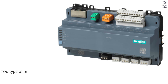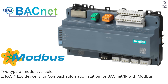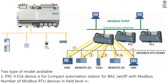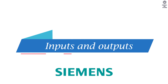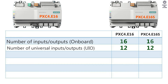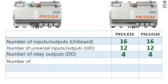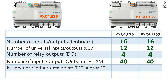Types: 2 types of model available. 1. PXC4E16: Compact Automation Station for BACnet IP with Modbus; number of Modbus RTU devices in field-level network per device is up to 31. 2. PXC4E16S: Compact Automation Station for BACnet IP only. Number of Universal Inputs and Outputs for both models is 12; Relay Outputs is 4. Total I/O onboard plus TXM for both PXC4E16 and PXC4E16S is 40. Number of Modbus Data Points TCP/RTU: PXC4E16 is 40, PXC4E16S is 0.